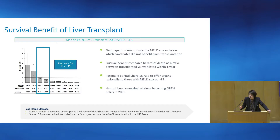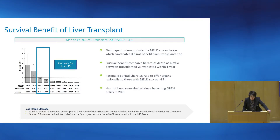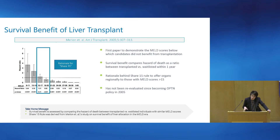The rationale behind this SHARE 15 rule came from a study conducted by Marion in 2005. What they showed in that study is that there is a cutoff below which you do not benefit from transplant. Specifically, they found it was a MELD score less than 15, where those individuals will actually have lower mean survival compared to somebody who was on the wait list and did not receive a transplant. That's why the SHARE 15 rule was placed in 2005, and this rule has not been re-evaluated since.